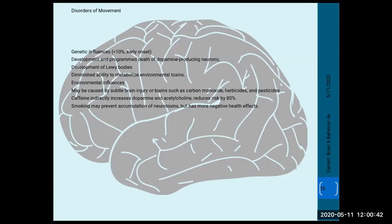Muhammad Ali, the great boxing champion, is probably the most famous case of brain injury-induced Parkinson's — repeated blows to the head during his boxing career are believed to have caused his Parkinson's, which he battled for years before passing. Former NFL players with traumatic head injuries sometimes develop Parkinson's-like symptoms at an earlier onset. Repeated hits to the head damaging the substantia nigra and surrounding areas appear to be the mechanism.